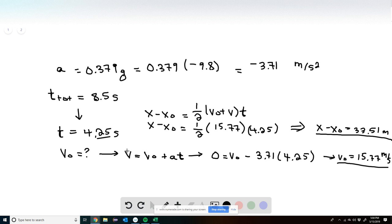Now at the top, V is going to be 0 because it's stationary for a moment when it's at the very top. V0 is the unknown, A is negative 3.71, and T is 4.25. This gives us a value of V0 equal to 15.77 meters per second.